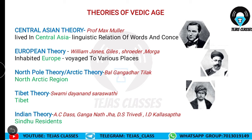The Indian theory was given by A.C. Das, Gaganath Jha, D.S. Trivedi, and L.D. Kala. They said these people are basically Sindhu residents — they are Indians only. The Indus river is called Sindhu in Hindi. According to the Indian theory, Aryans are Indians who came from the Sindhu, that is the Indus Valley civilization. These are the important theories of Aryan invasion — please make a note.